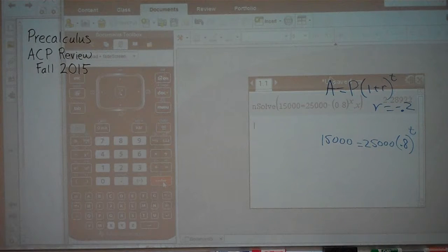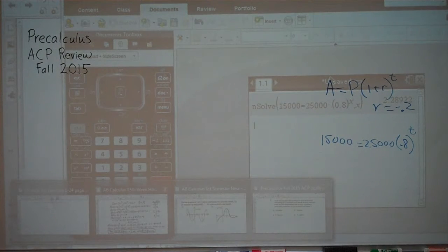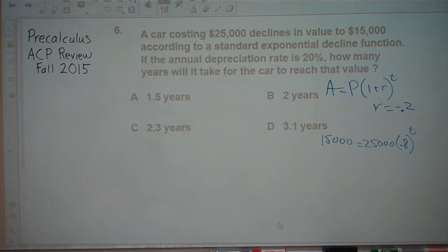We get 2.289 years. So it should round to 2.29 years, 2.3 years. Let's go ahead and check our answer choices. So we get 2.3 years. Our answer choice is C.